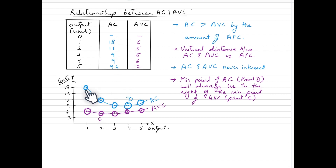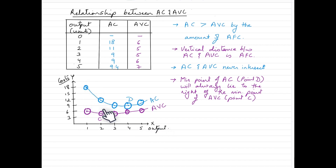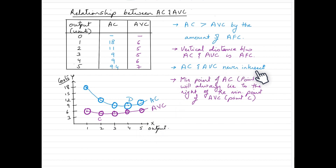The vertical distance between the AC and AVC curves is a depiction of average fixed costs. We can see that this distance between the two curves decreases with an increase in output. This is simply because the gap between them is AFC, and average fixed cost will always continue to decline as output rises. However, at any given point in time, AC and AVC will never intersect each other because average fixed costs can never be zero.